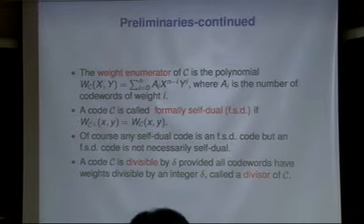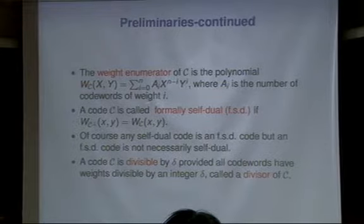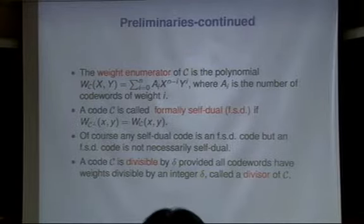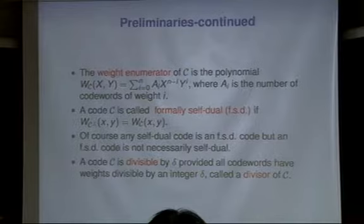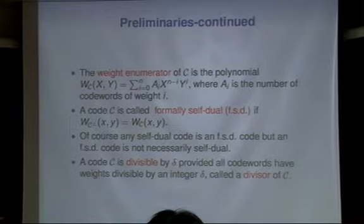We have the concept of formally self-dual: if the weight enumerator of the dual code equals the weight enumerator of the original code. The weight enumerator W_C(x,y) is a homogeneous polynomial in two variables, where the coefficients A_i represent the number of codewords of weight i. A self-dual code will be formally self-dual, but not the converse. A code is divisible by some number delta if all codewords have weight divisible by that delta.